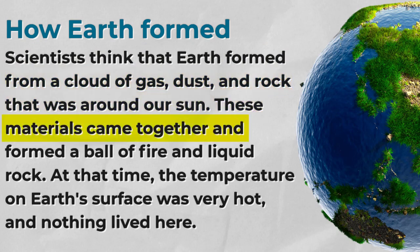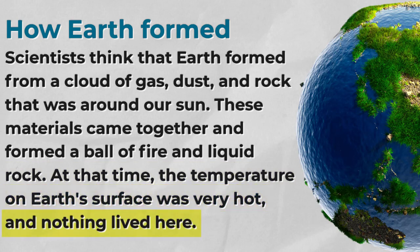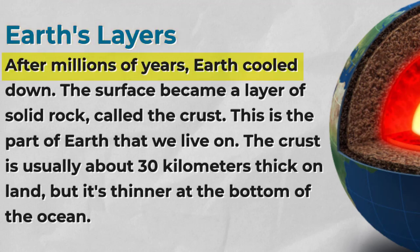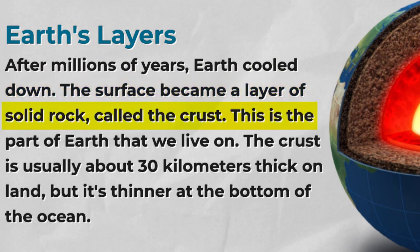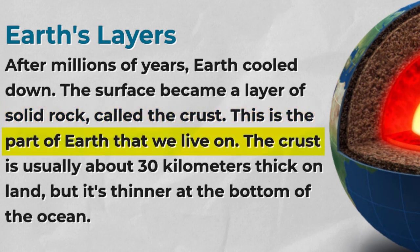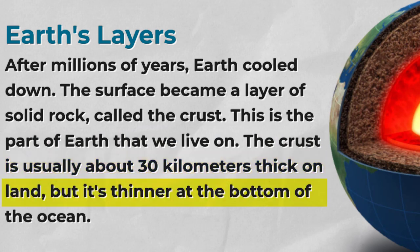These materials came together and formed a ball of fire and liquid rock. At that time, the temperature on Earth's surface was very hot, and nothing lived here. After millions of years, Earth cooled down. The surface became a layer of solid rock, called the crust. This is the part of Earth that we live on. The crust is usually about 30 kilometers thick on land, but it's thinner at the bottom of the ocean.